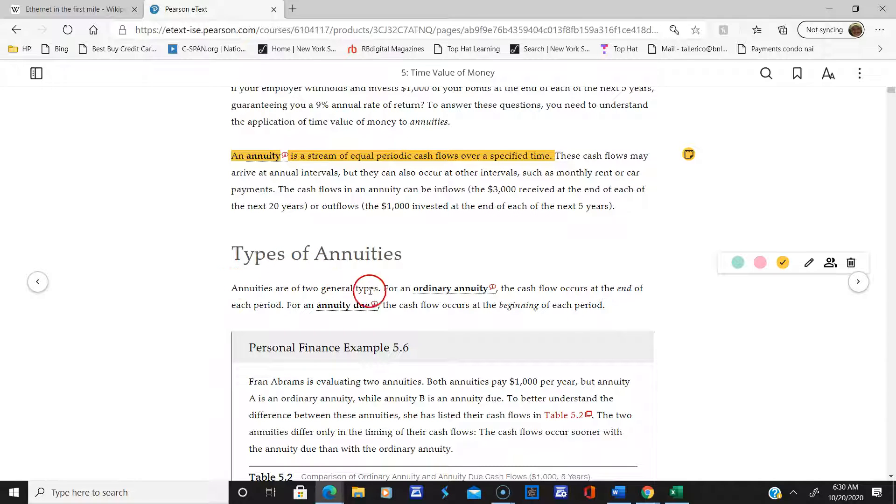There are basically two types of annuities. There's an ordinary annuity where you put money in at the end of the period, and an annuity due where you put money in at the beginning of the period. You can see the difference - this is the end of the period and this is the beginning of the period.